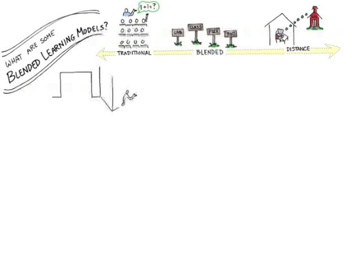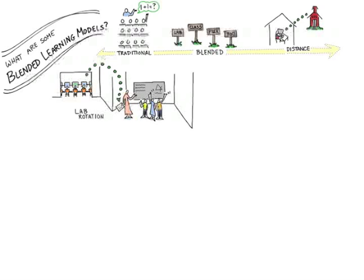Lab rotation is where students move in and out of a classroom to a computer lab. Many people seeing this model will think it looks very familiar to a traditional computer lab. However, if you look under the hood, the difference is that in a lab rotation, the data from the content in the learning lab informs the instruction in the classroom.